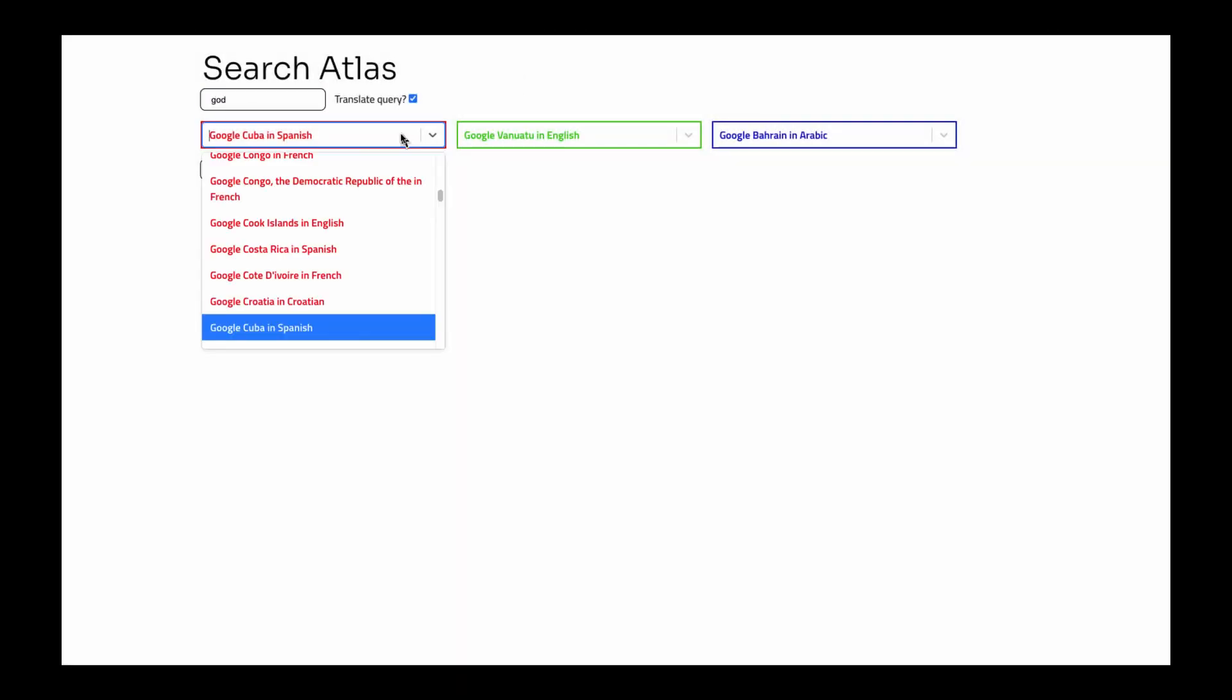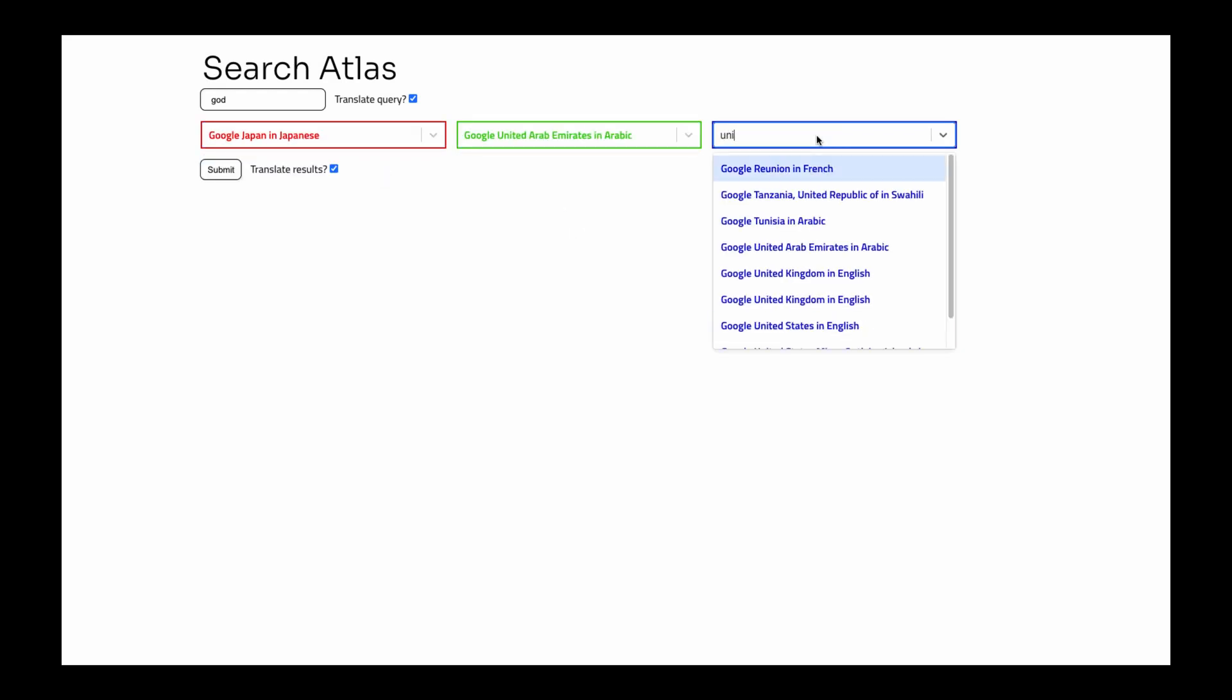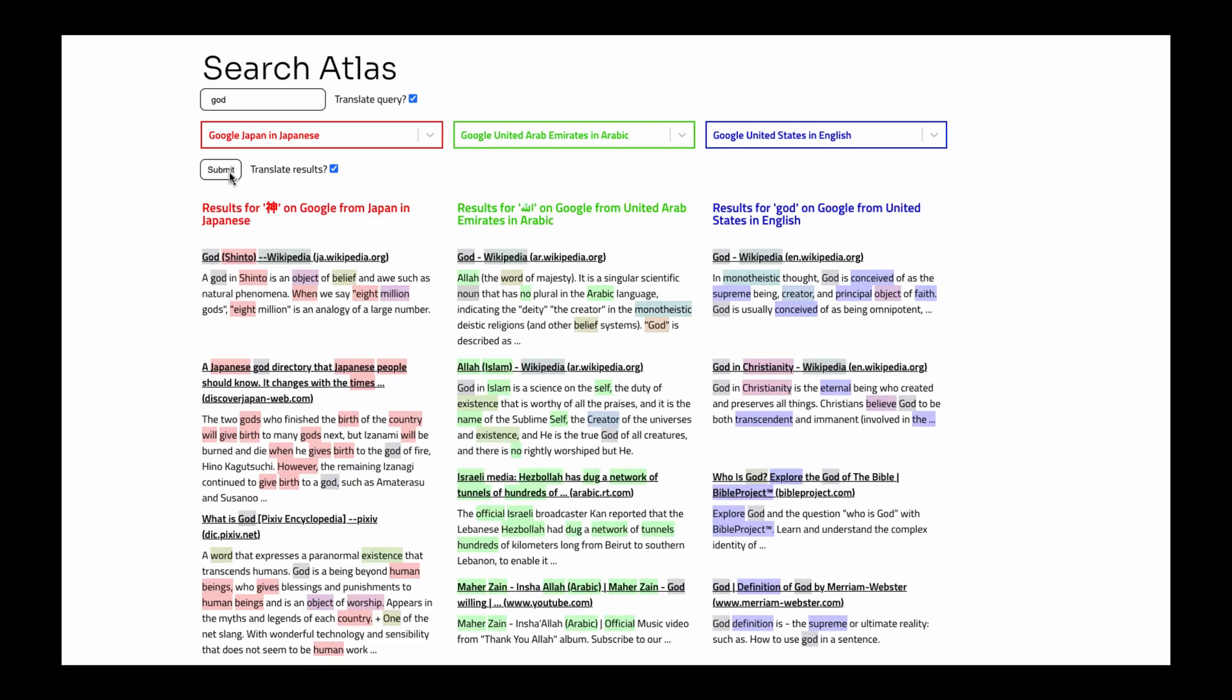This is a quick preview of our tool, which shows a user searching for the query God in three different locations, showing divergent results. Our tool highlights the information that the user would have missed.